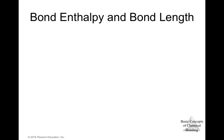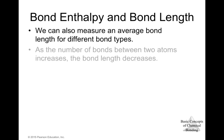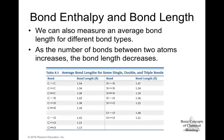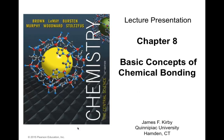We can also relate bond enthalpy to bond length. As the number of bonds between two atoms increases, the bond length decreases. The C-C single bond length is 1.54 Å, the C=C double bond is 1.34 Å, and the C≡C triple bond is 1.20 Å. This trend holds regardless of the elements involved — higher bond multiplicity always gives a shorter bond length. With that, we finish Chapter 8: Basic Concepts of Chemical Bonding.